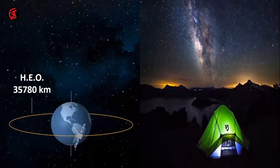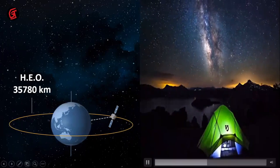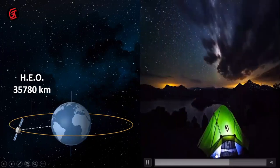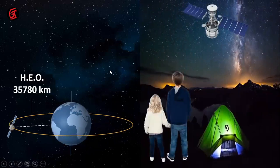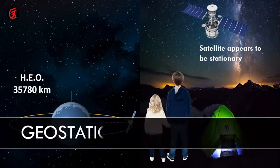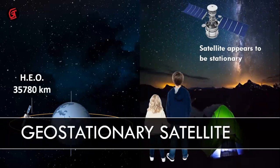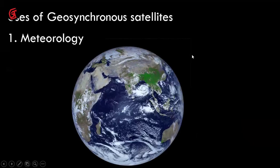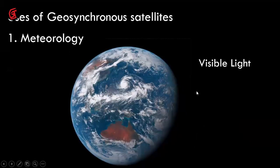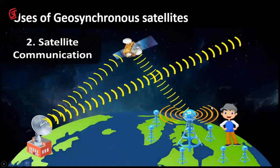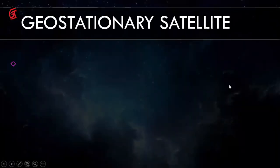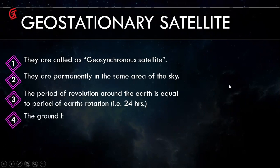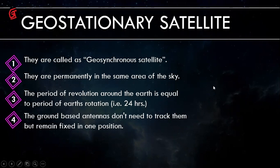Time-lapse videos show this concept well. A satellite appears stationary — similar to how the moon looks stationary even though it is revolving — because the earth is also revolving at the same rate. Geostationary satellites are used for meteorology, infrared light, and satellite communication, including dish TV antennas. They remain permanently in the same area of the sky, with a period of 24 hours.